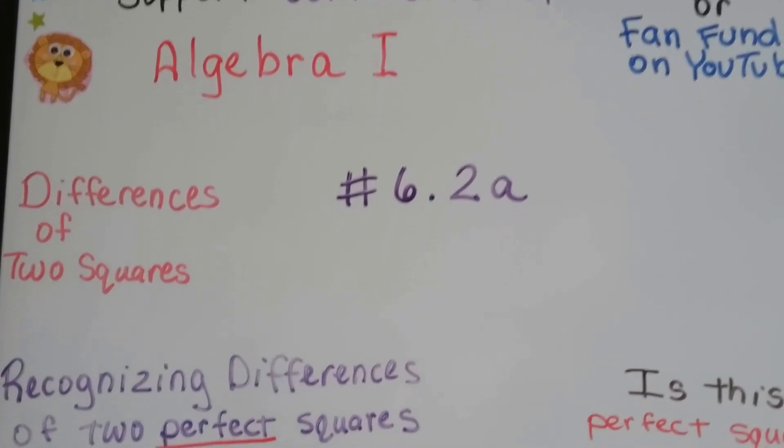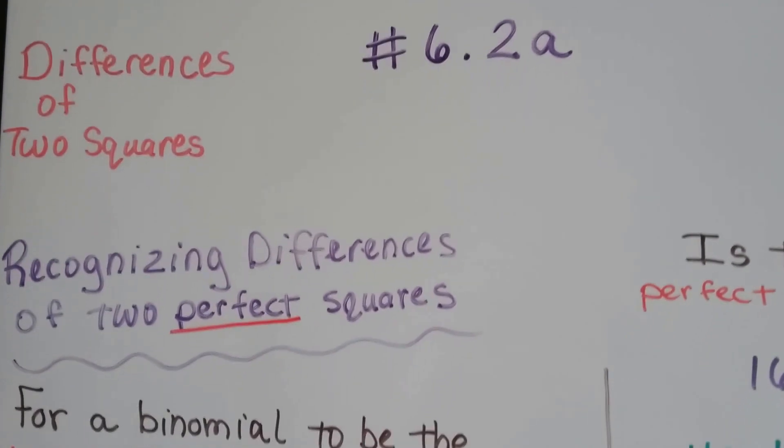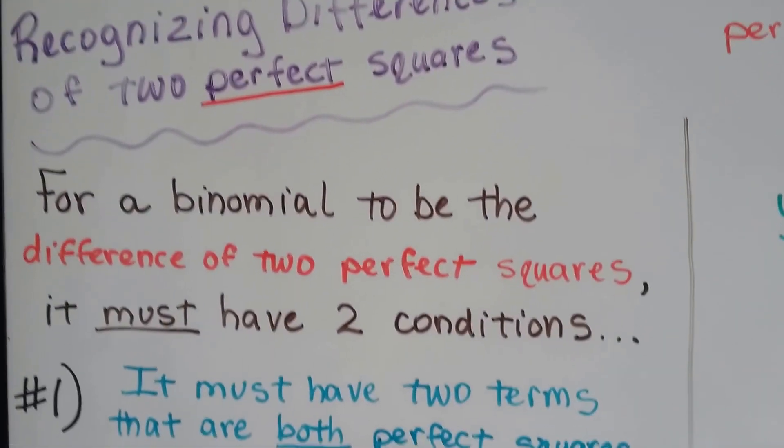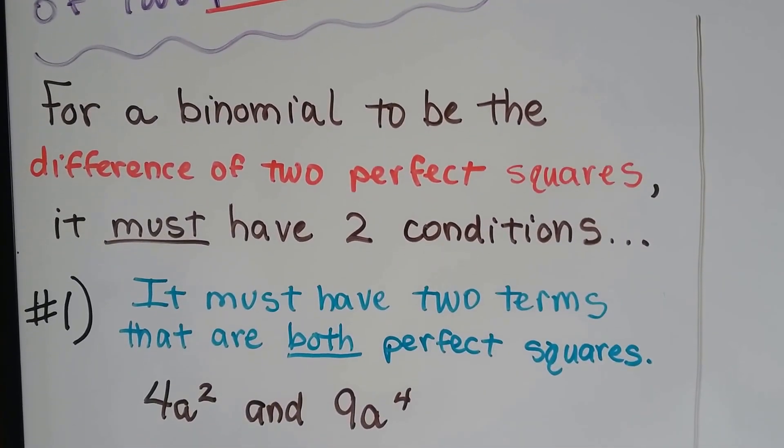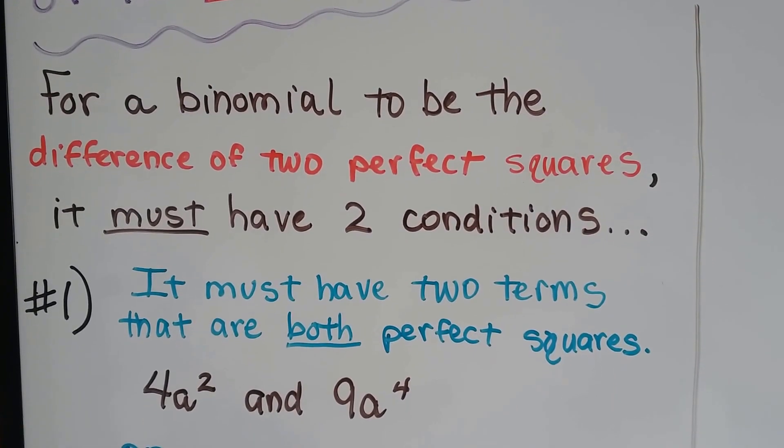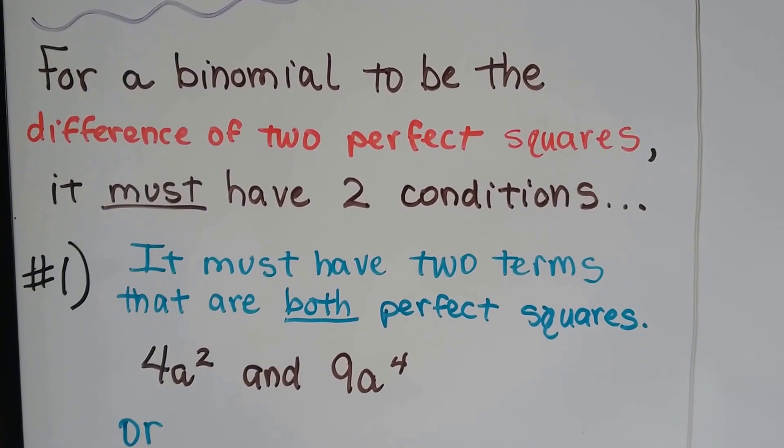Algebra 1 6.2a recognizing differences of two perfect squares. For a binomial to be the difference of two squares or two perfect squares, it's got to have two conditions.